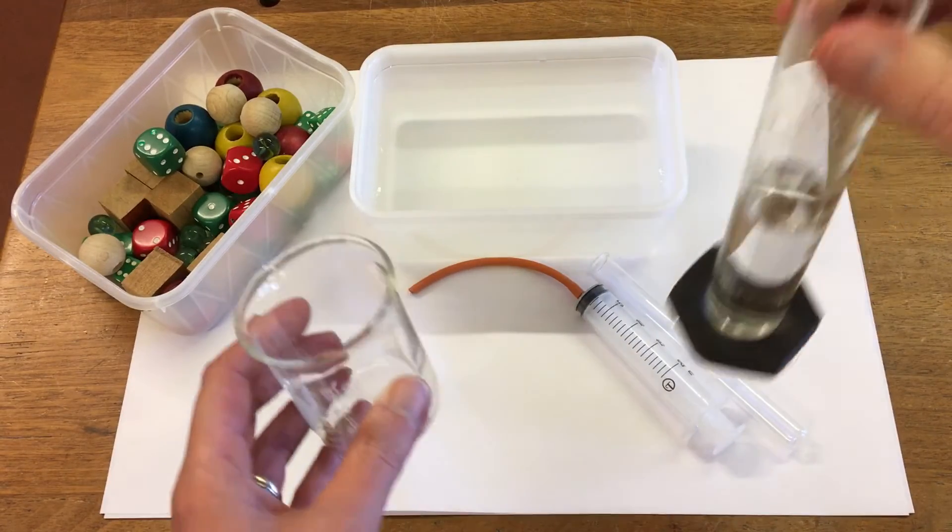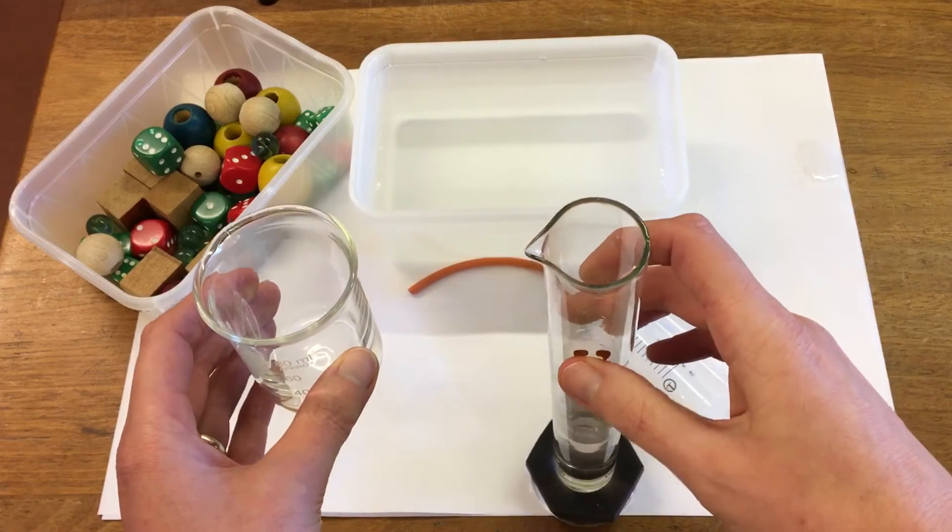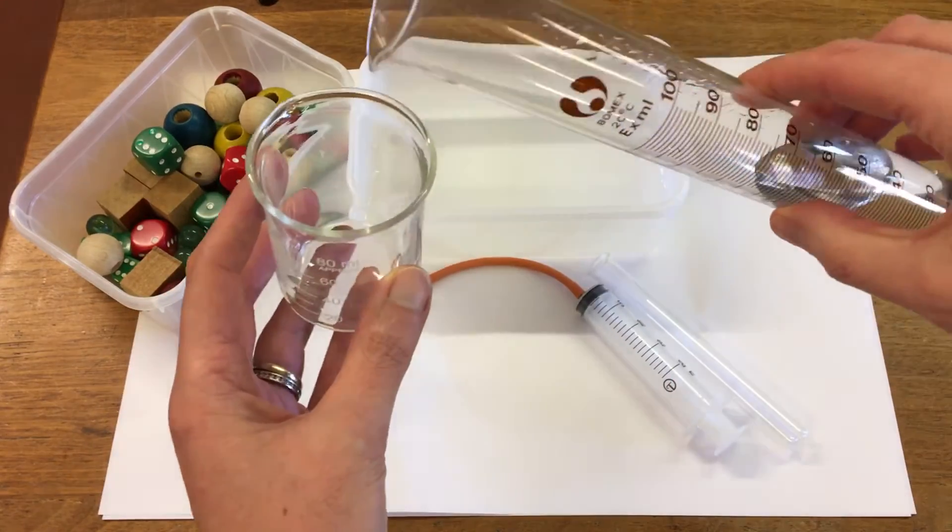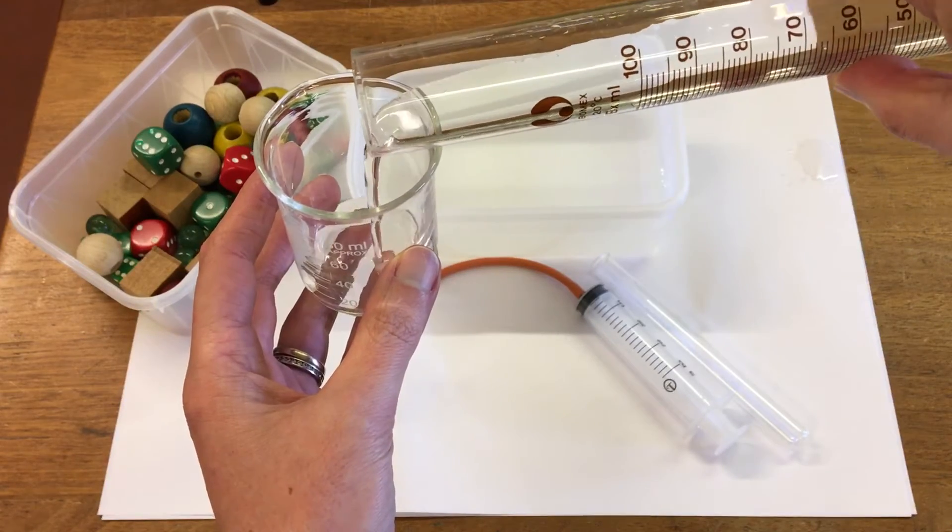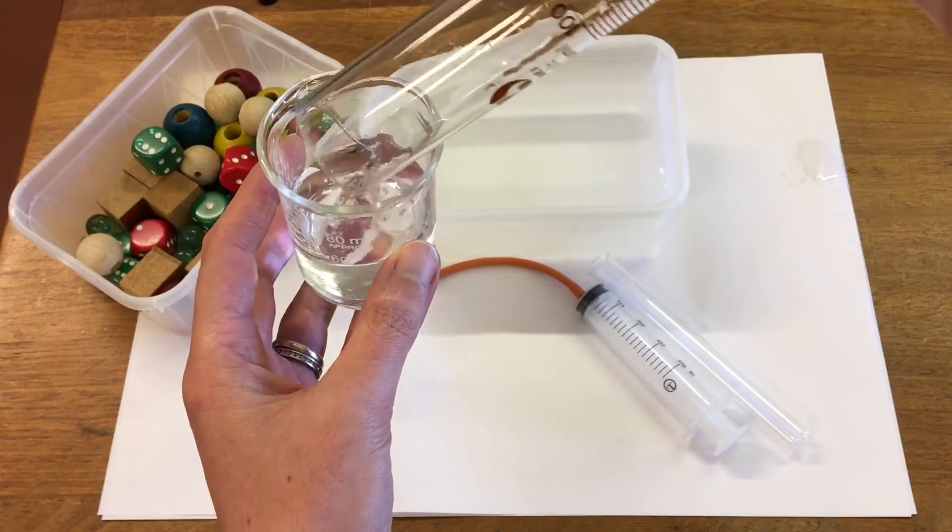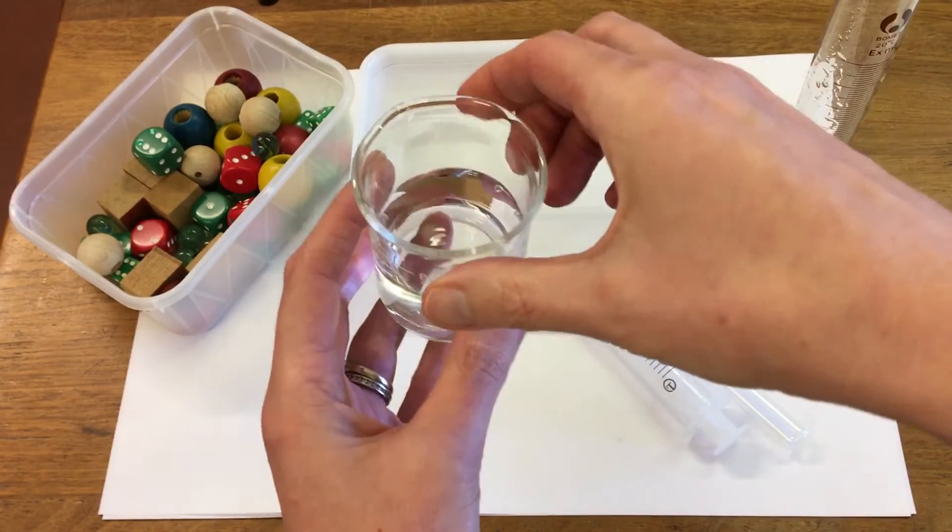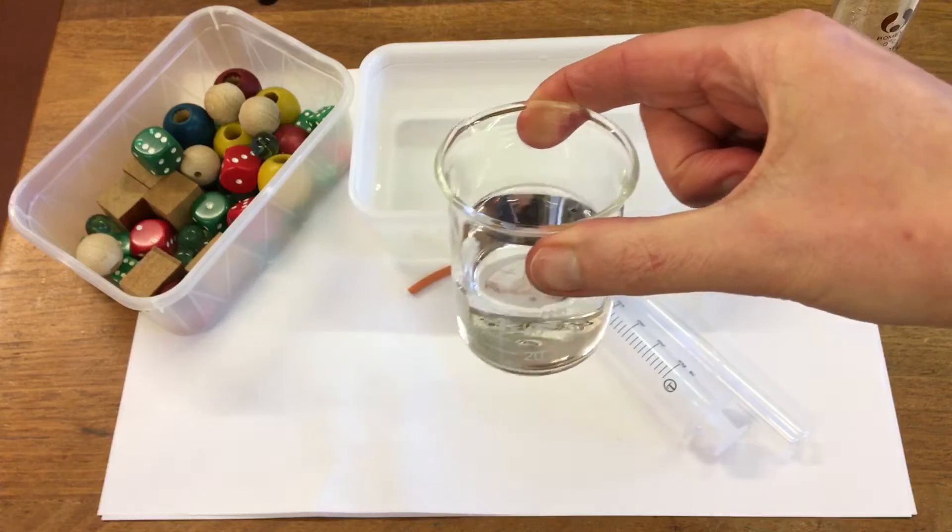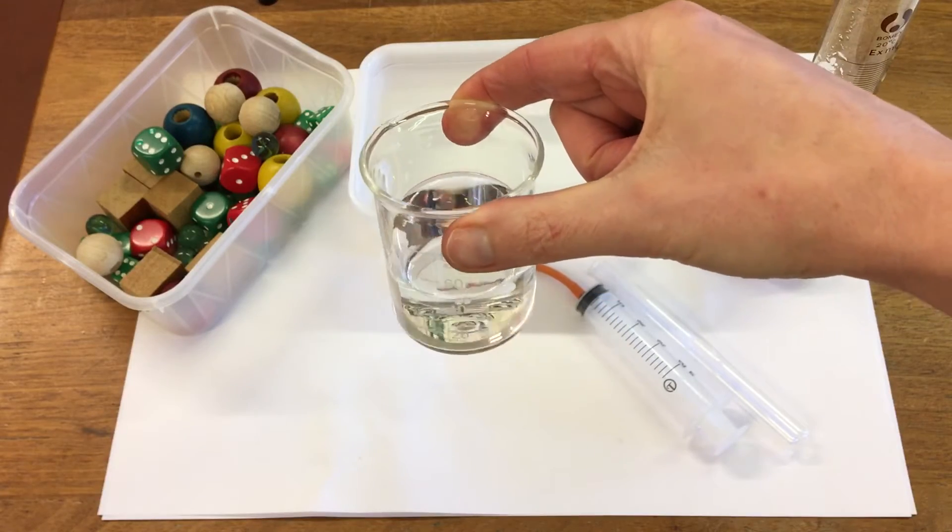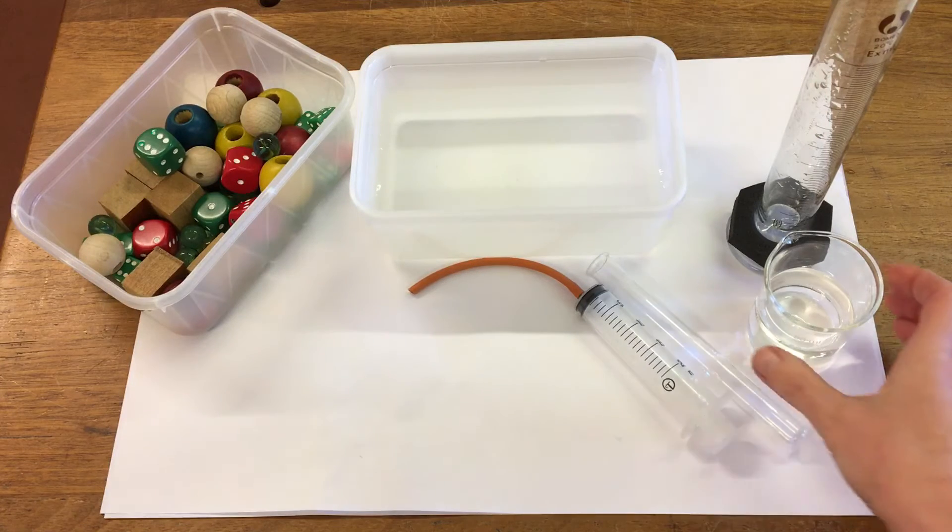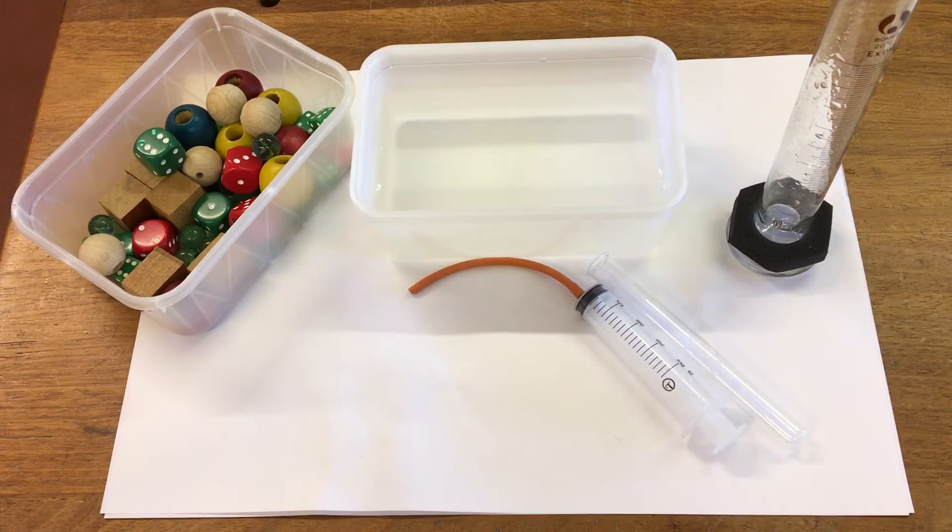I'm then going to pour it into a beaker and we're going to look at whether it changes shape and changes volume. And then back into the measuring cylinder.